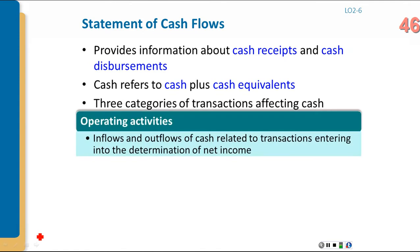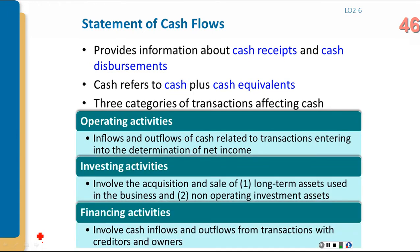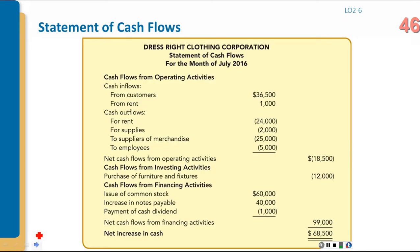The statement of cash flows provides information about cash received and cash disbursed, using either the direct or indirect method (covered in later chapters). It is divided into three sections: operating activities (primary business operations), investing activities (property, plant and equipment and long-term investments), and financing activities (long-term liabilities and equity accounts). This shows how cash flows throughout the entire company.